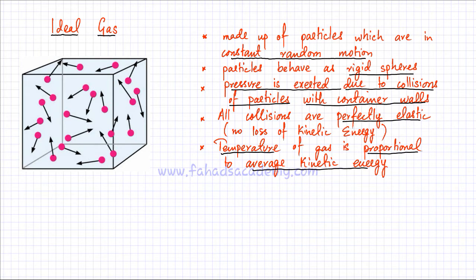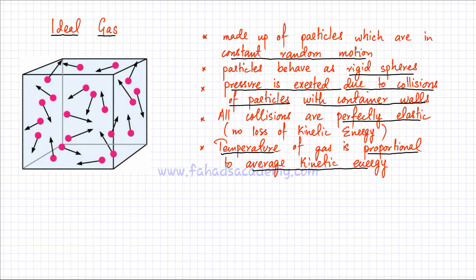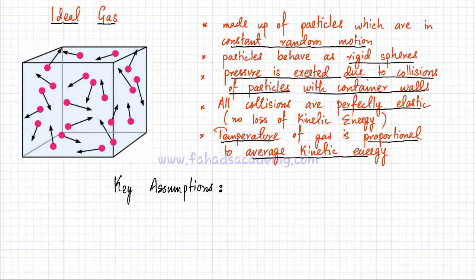When you measure the temperature of a gas, that's proportional to the average kinetic energy of the gas. This is a model of what a gas would ideally behave like. An ideal gas is a model of a gas, but it has two absolutely key assumptions. Number one: gas particles have negligible intermolecular forces.